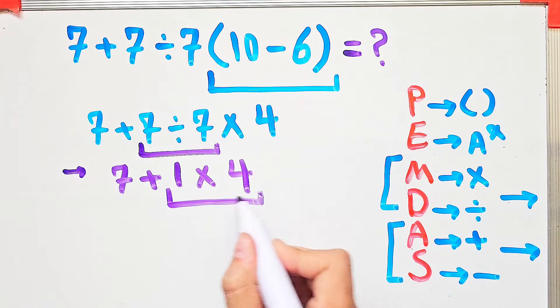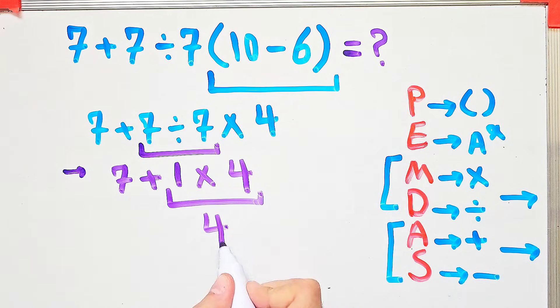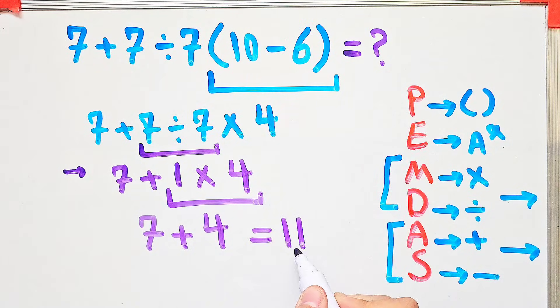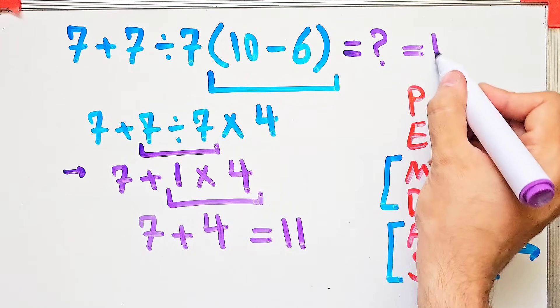In this step, we do the multiplication. 1 times 4 equals 4. And 7 plus 4 equals 11. The final answer of this question equals 11.